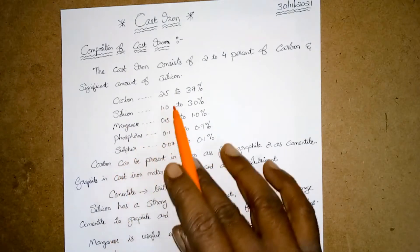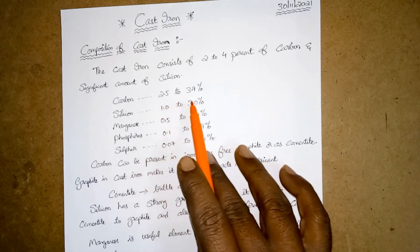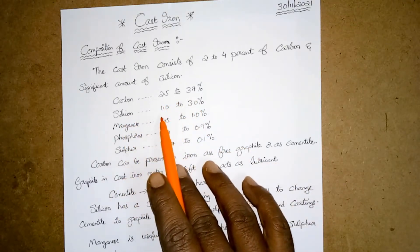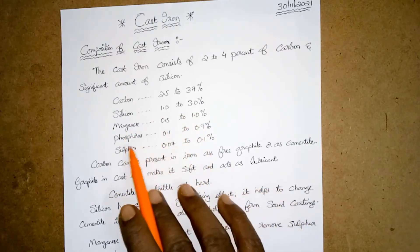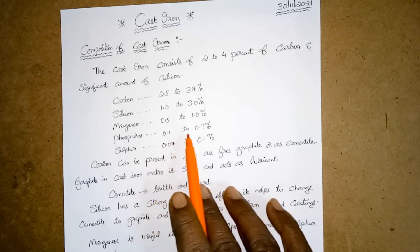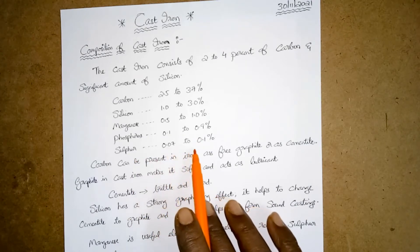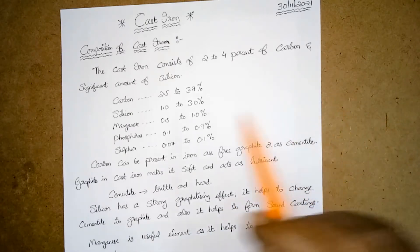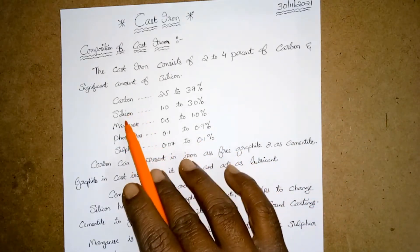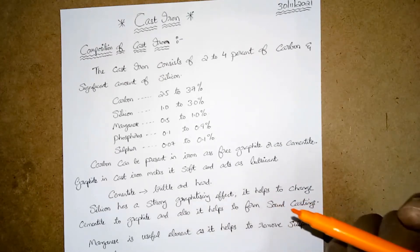The cast iron consists of 2 to 4 percent carbon and a significant amount of silicon. Carbon percentage is 2.5 to 3.7, silicon is 1 to 3 percent, manganese is 0.5 to 1 percent, phosphorus is 0.1 to 0.9 percent, and sulfur is 0.07 to 0.1 percent.